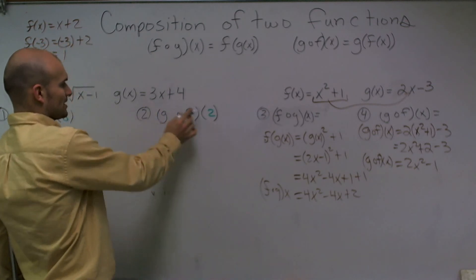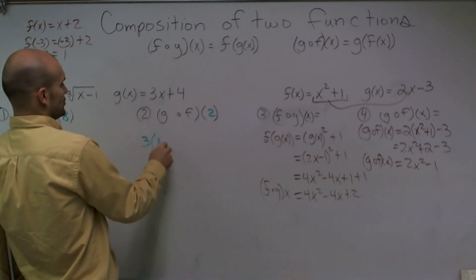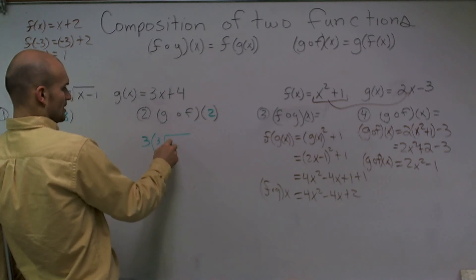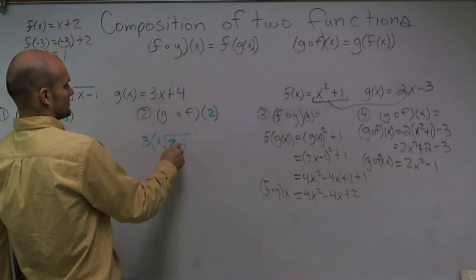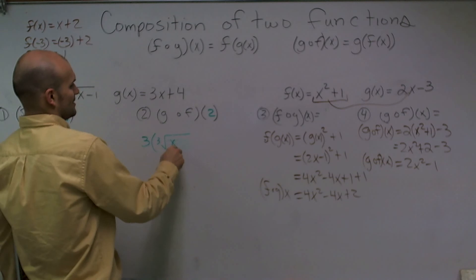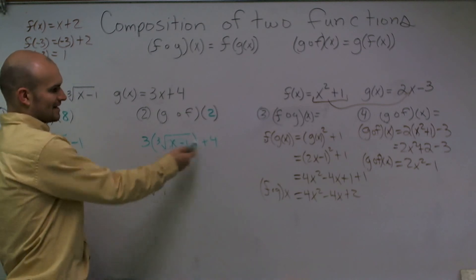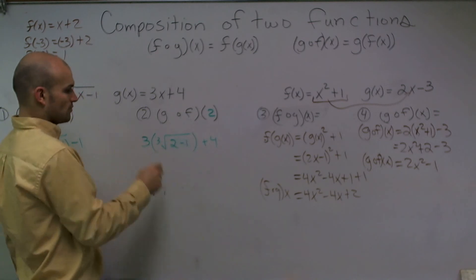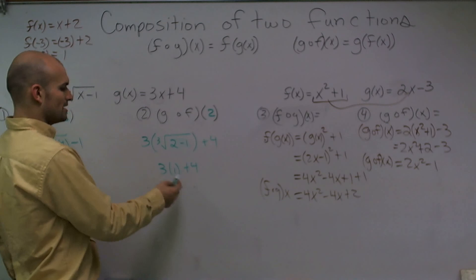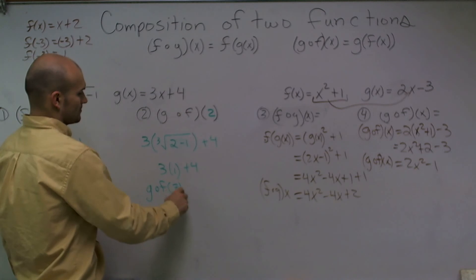Let's do this problem. If I plug in 2, f of x, so I'll have 3 times the cube root of 2 minus 1, x minus 1, and then plus 4. I can't simplify this any further, so now I'm just going to plug in 2. 2 minus 1 is 1. The cube root of 1 is 1. So I have 3 times 1 plus 4. 3 times 1, final answer, equals 7. So I can say g of f of 2 equals 7.